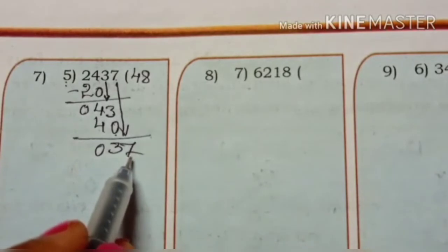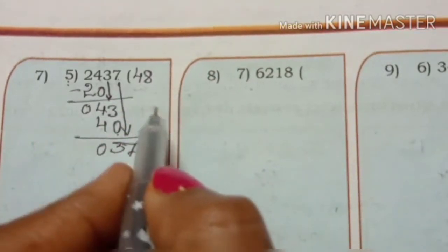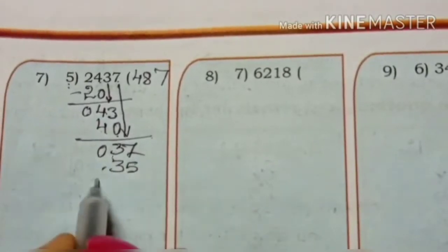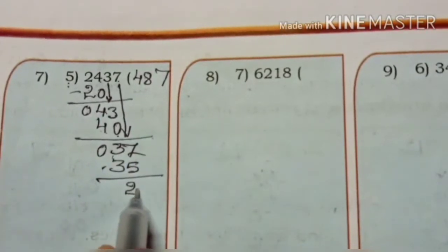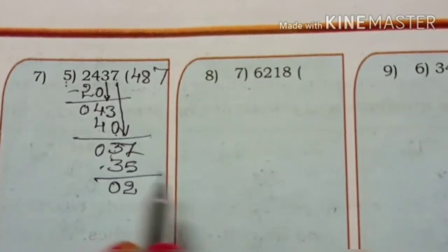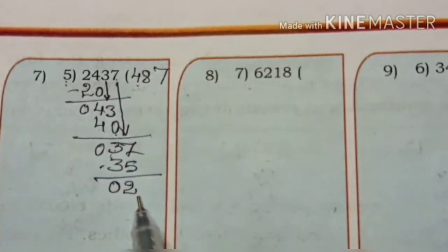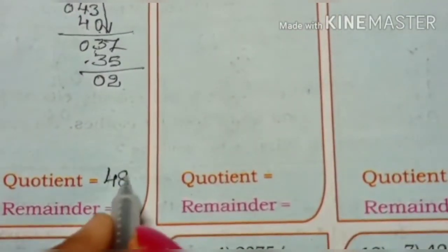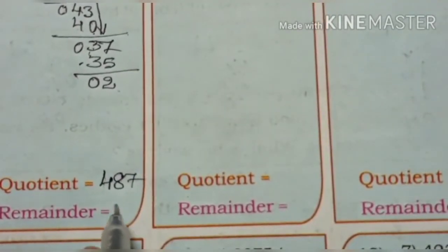37 divided by 5. 7 times 5 is 35. 7 minus 5 is 2, 3 minus 3 is 0. The quotient is 487 and remainder is 2.